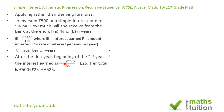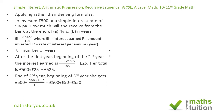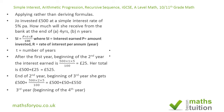Applying the simple interest formula: at the end of the first year the interest earned is £25, so if she withdraws her money she gets a total of £500 plus £25, which is £525. Similarly, at the end of the second year she gets £500 plus £50 interest, giving £550. And at the end of the third year she gets £500 plus £75, giving £575.